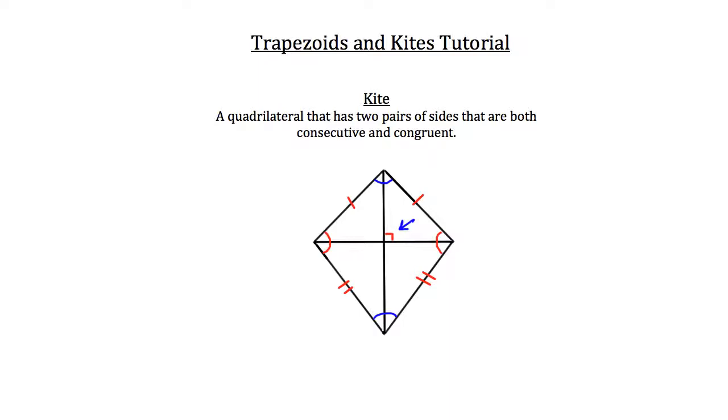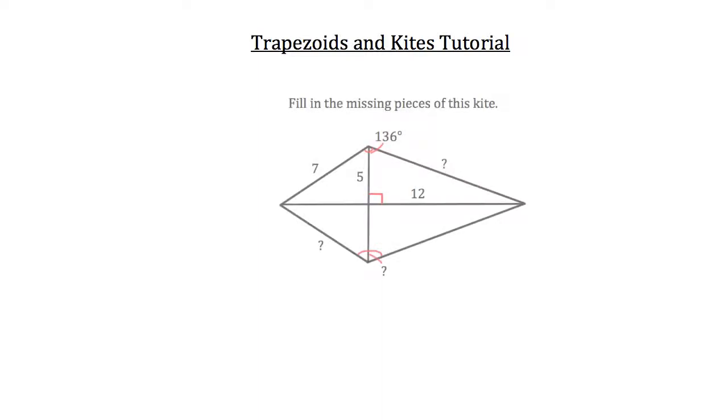So knowing what you know about kites now, let's take a look at a practice problem. I'd like you to fill in the missing pieces of this kite, so the missing angles or sides that are indicated by a question mark. I'll give you a moment to pause this tutorial video and try to fill those in on your own. Then go ahead and restart the video and I'll go over them with you.